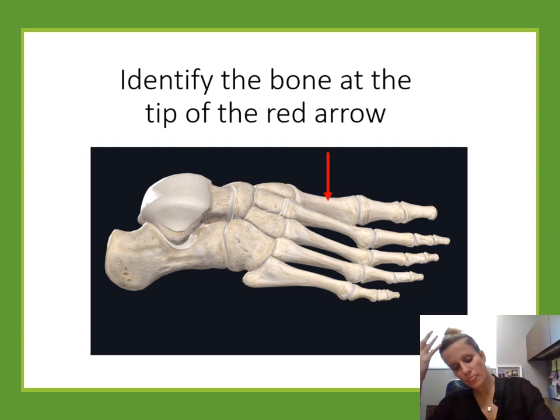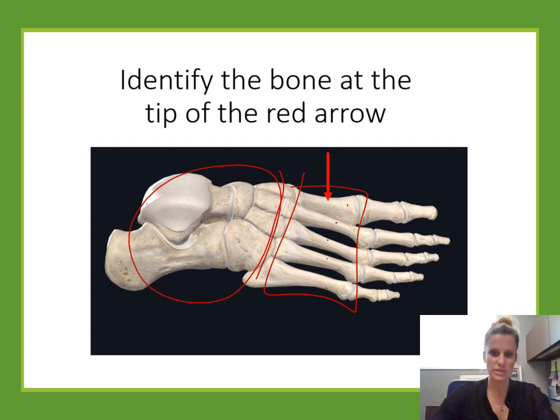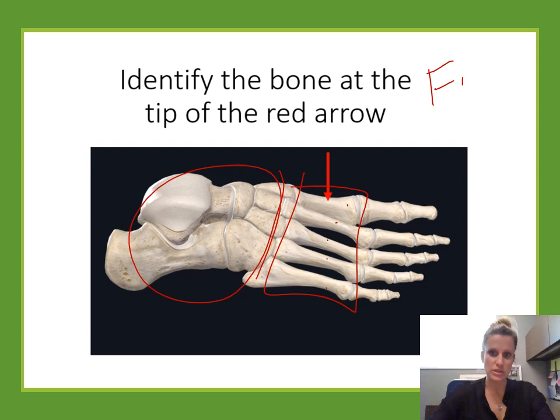Identify the bone. The feet are organized very similarly to the hands. The ankle bones are the tarsal bones. After the tarsal bones come the metatarsal bones — five of them, numbered like the hands with the big toe as number one. This would be the first metatarsal.